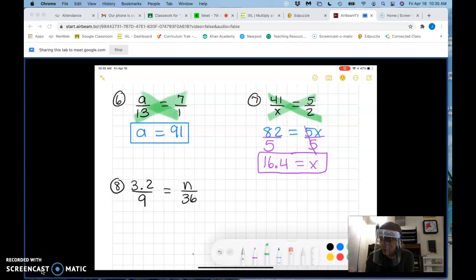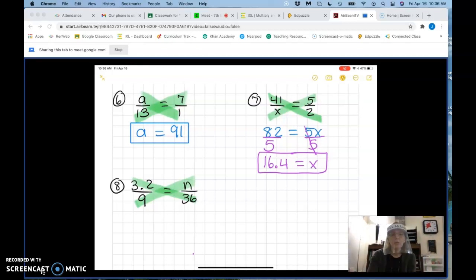The last one. Again, draw the x. Remember, I'm drawing it so you guys should have that x on your paper too. If you don't, you need to add all those x's now because that shows you what you're multiplying. What is 3.2 times 36? 115.2. And what is nine times n? Nine n. Good.